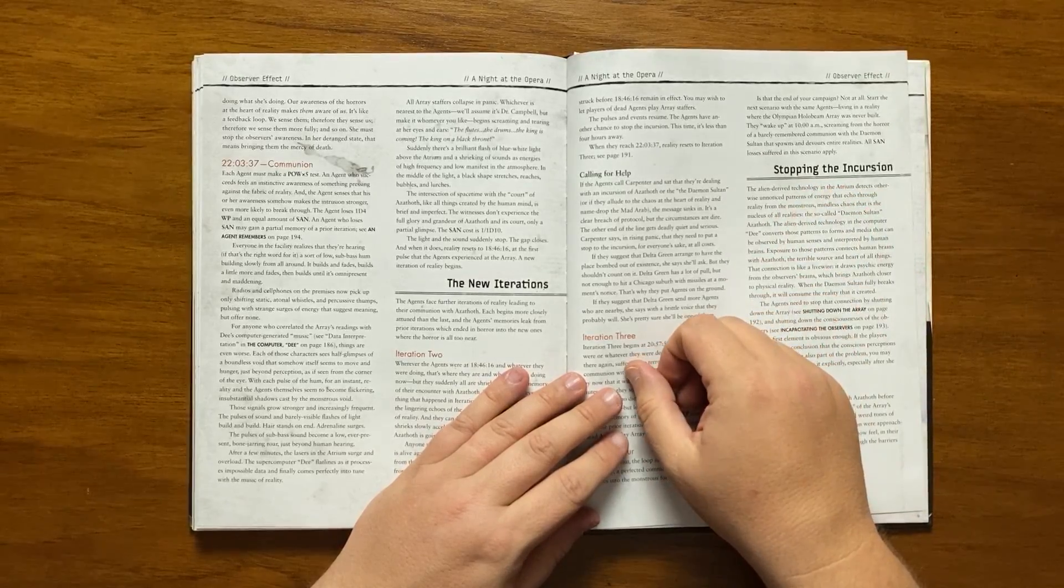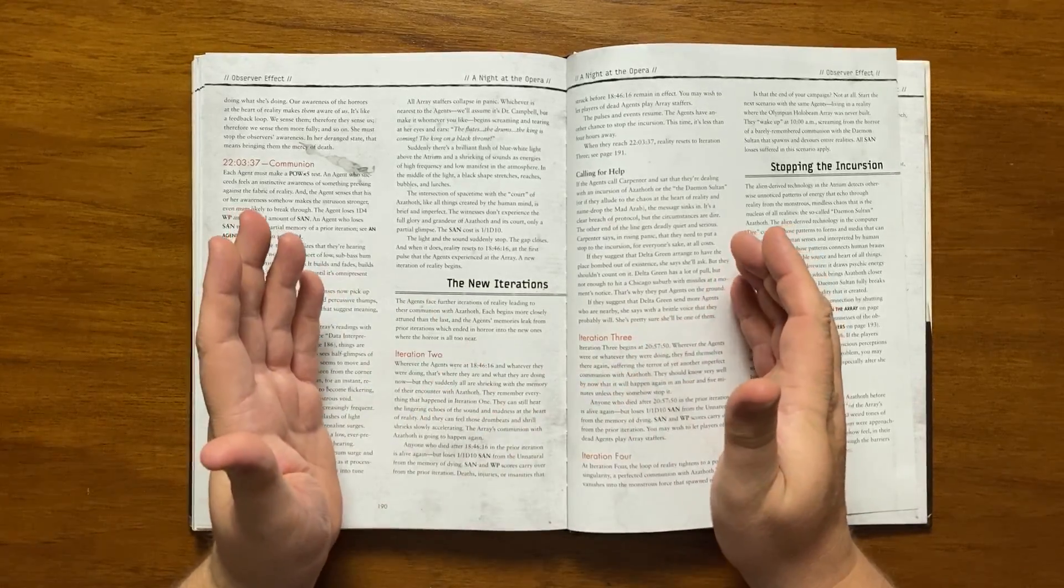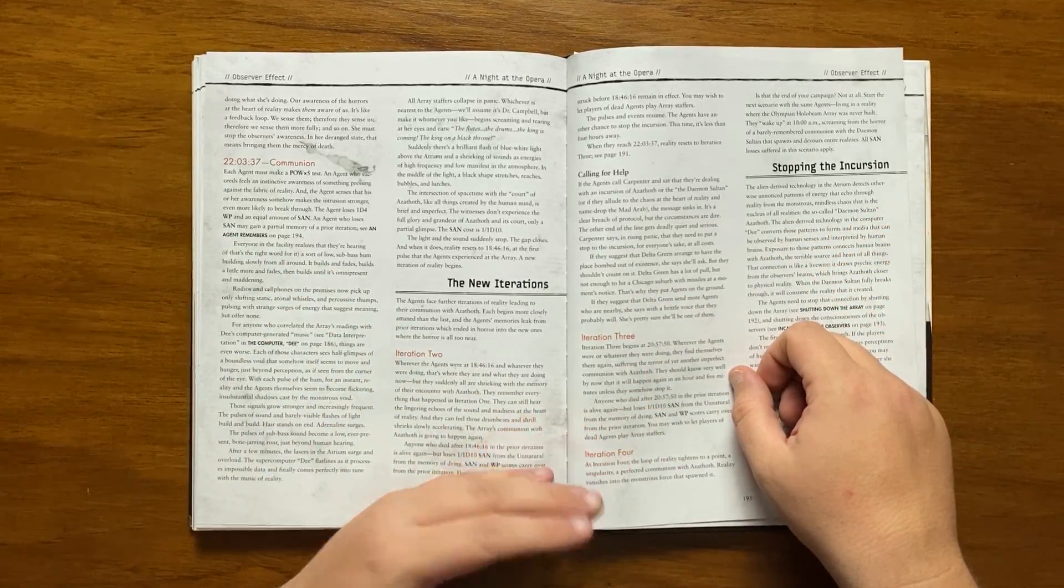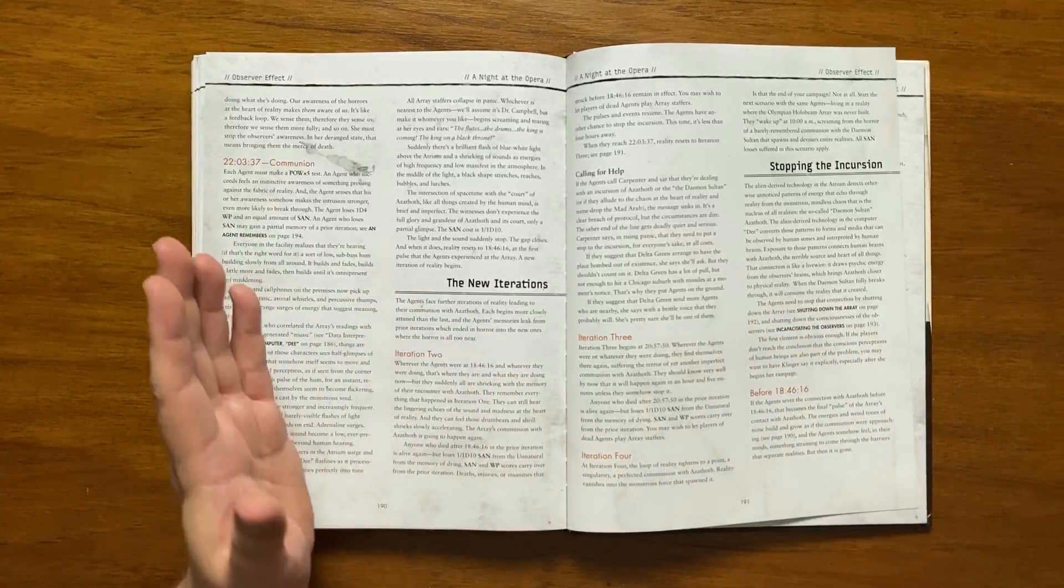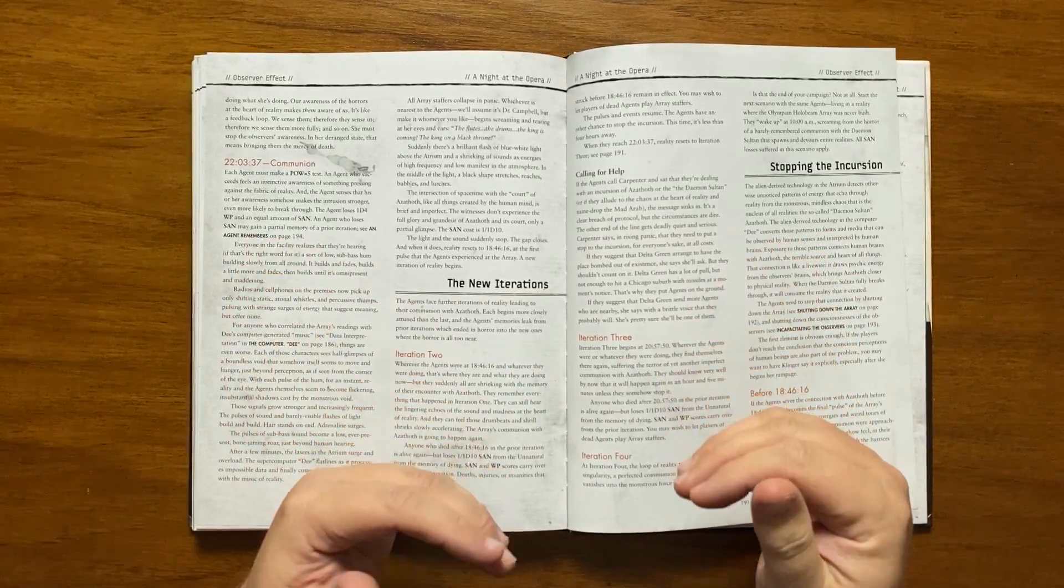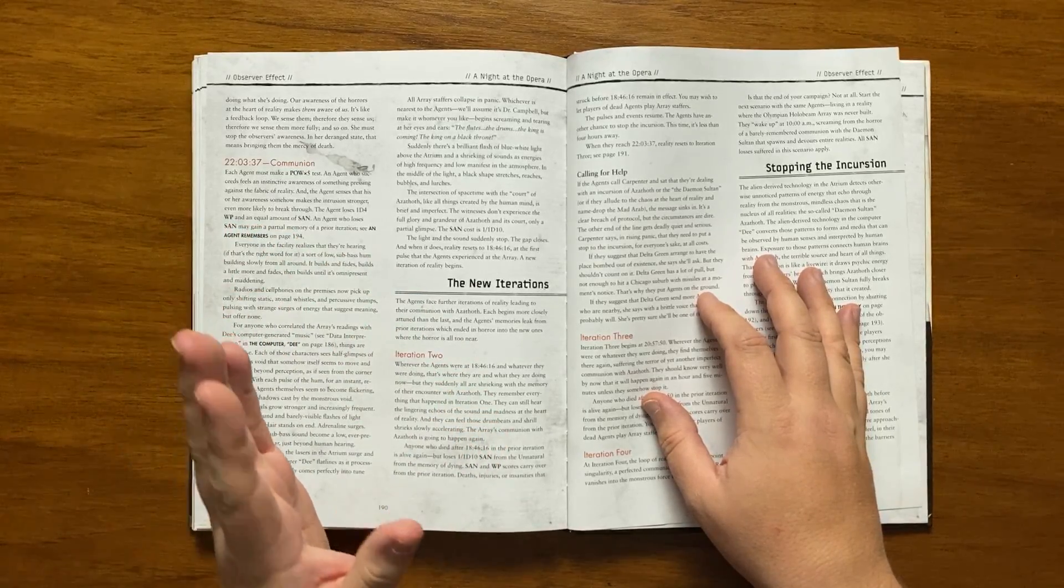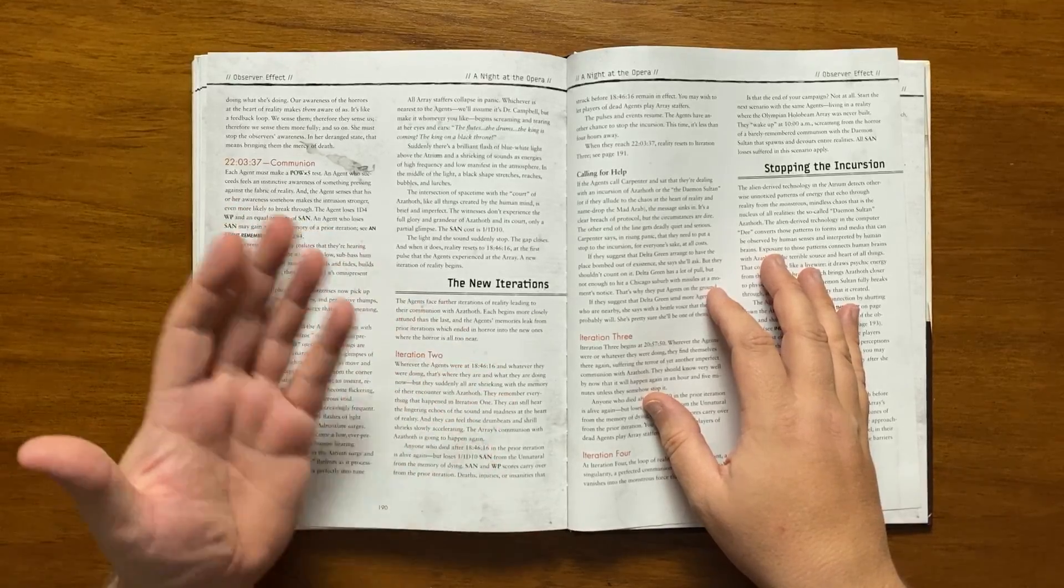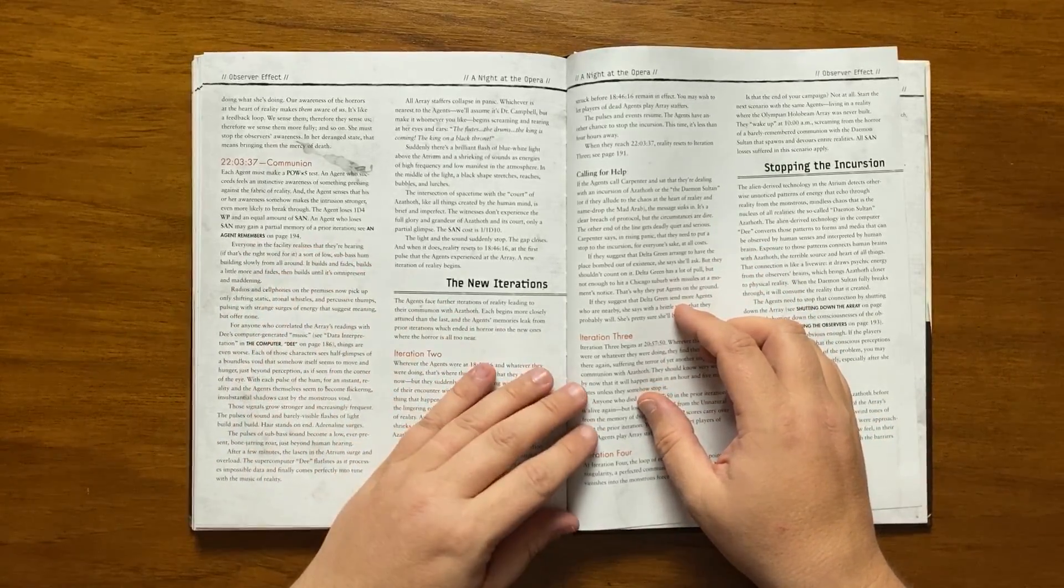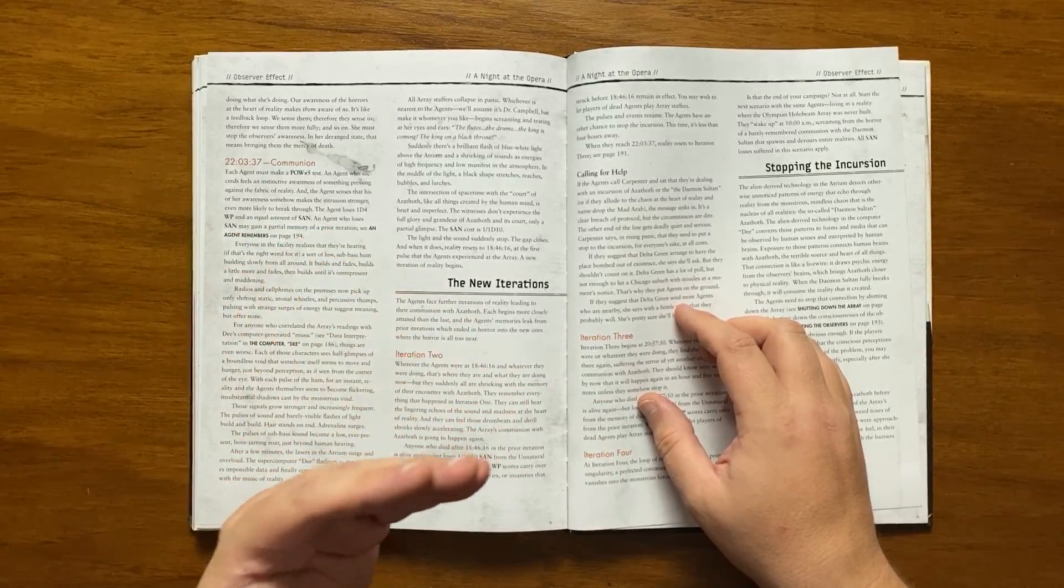At 22.07, we move into communion. Again, the power times fire roll is needed with the same feelings and sound loss and everyone realises that they are hearing a deep bass hum slowly building around them. It builds and fades, getting louder each time till it becomes constant. Radios and cell phones now only pick up shifting static, atonal whistles and percussive thumps pulsing with strange energy. For those who looked at these correlations of the readings and music, it's much worse with them catching glimpses of a boundless void that moves and hungers, just out of the eye line of perception, and with each pulse reality flickers and the agent becomes a flickering insubstantial shadow against the monstrous void. As the signals grow in intensity, the pulses of sound and flashes of light become more audible. Hair stands on end, adrenaline surges and a low bone-jarring roar can be faintly heard. The lasers of the atrium then surge and overload and de-flatlines as it cannot process the impossible data and become in tune with the music of reality. All of the staff collapses in panic and whoever is nearest the agents will say the flutes, the drums, the king is coming, the king on a black throne.